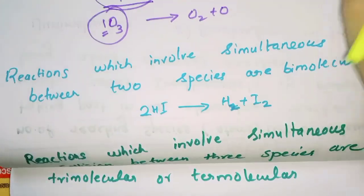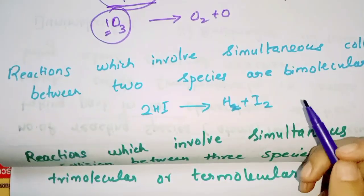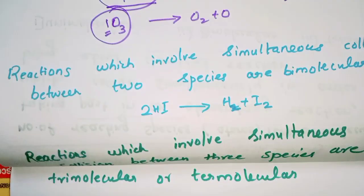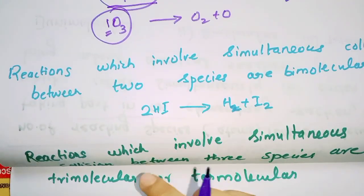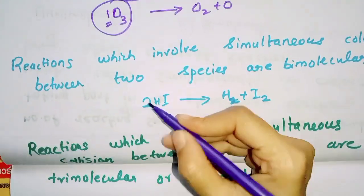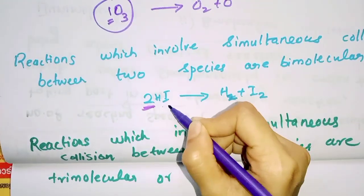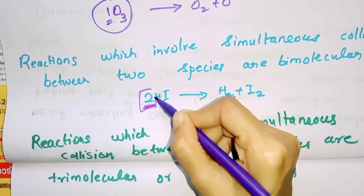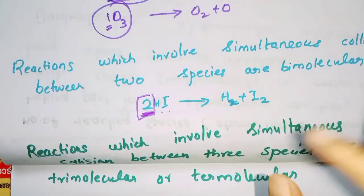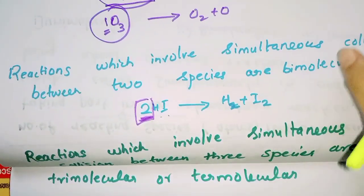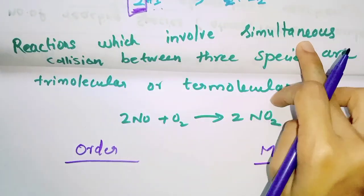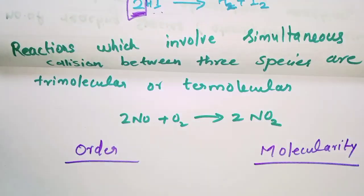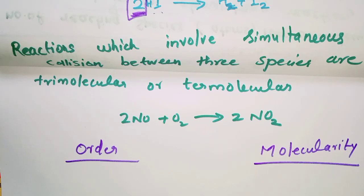The bimolecular reaction involves simultaneous collision between two species. For example, 2HI gives H2 plus I2. There are 2 moles of reactant, so the molecularity is 2 — this is bimolecular. The trimolecular reaction involves simultaneous collision between three species.